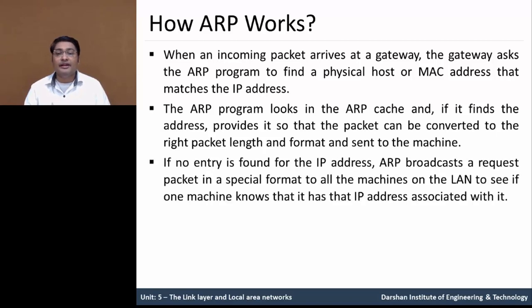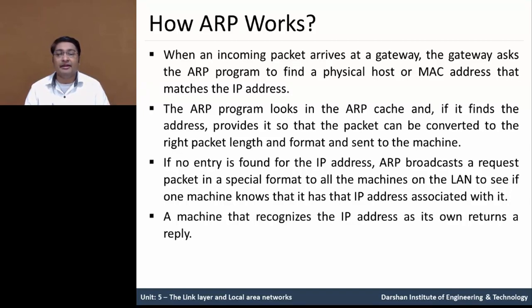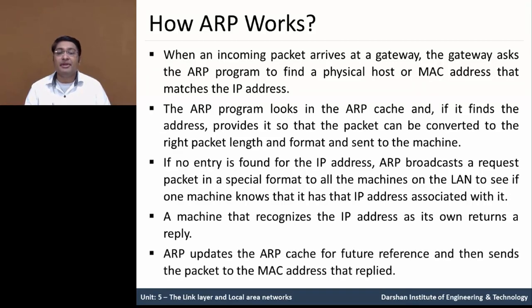If no entry is found for that IP address in the ARP cache, then ARP broadcasts a request packet in a special format to all the machines on the LAN which are connected to each other, to see if any one machine knows that it has an IP address associated with it, and then they can reply. A machine that recognizes the IP address as its own returns a reply. ARP then updates the ARP cache for future reference and sends the packet to the MAC address as replied.